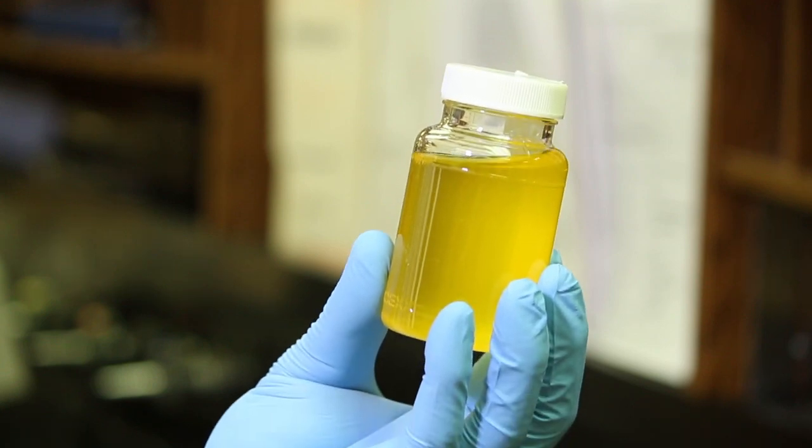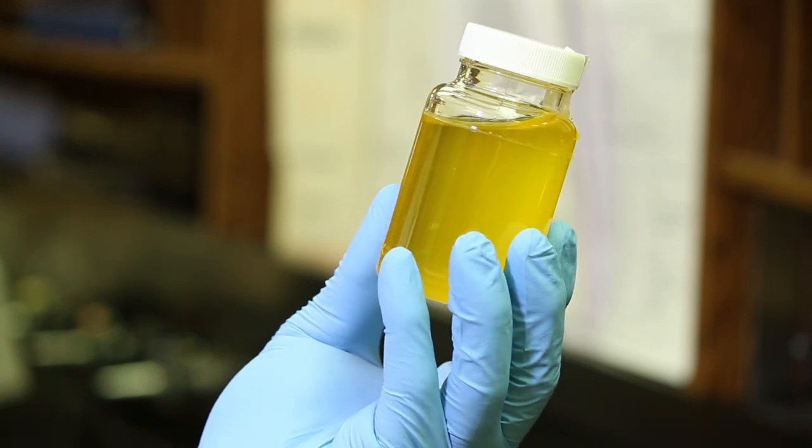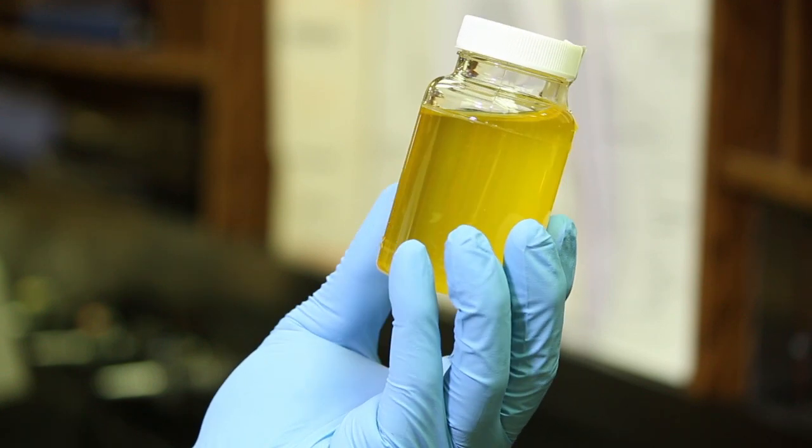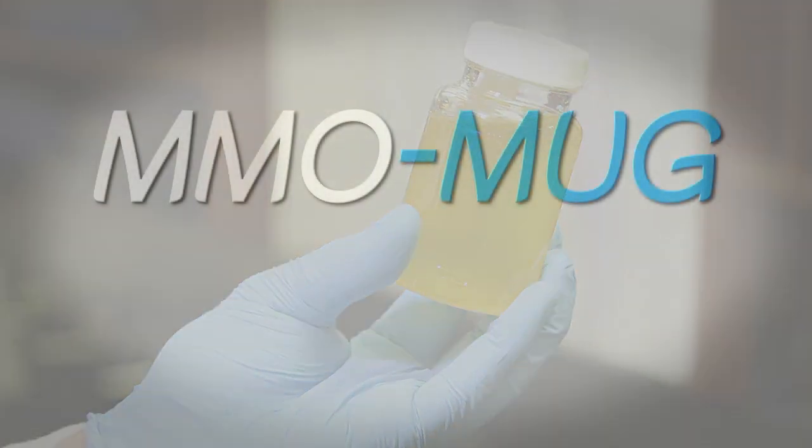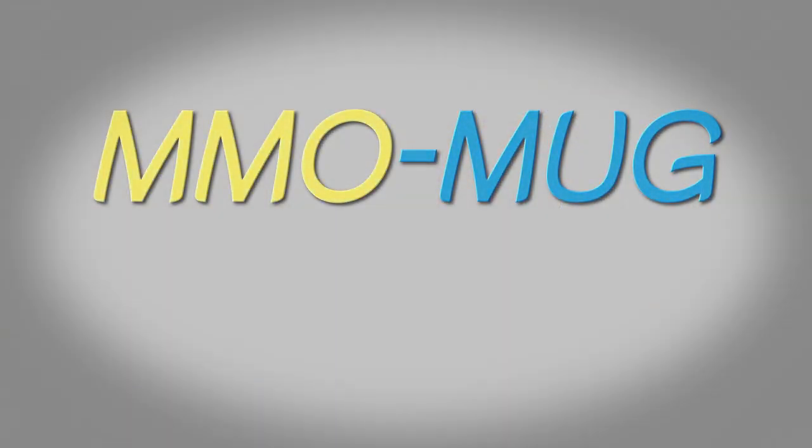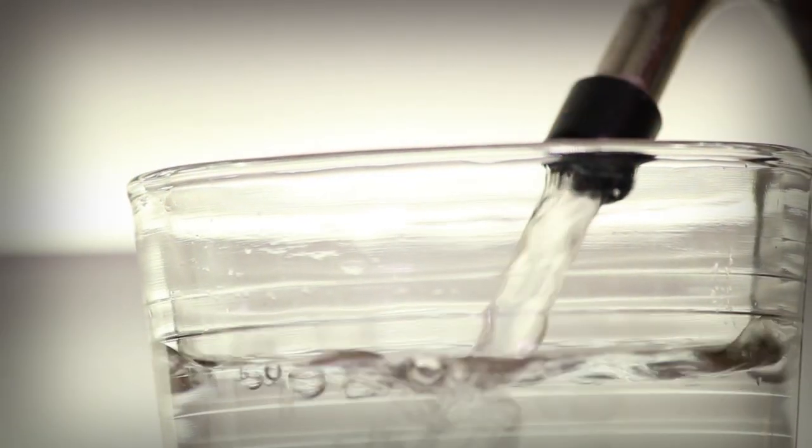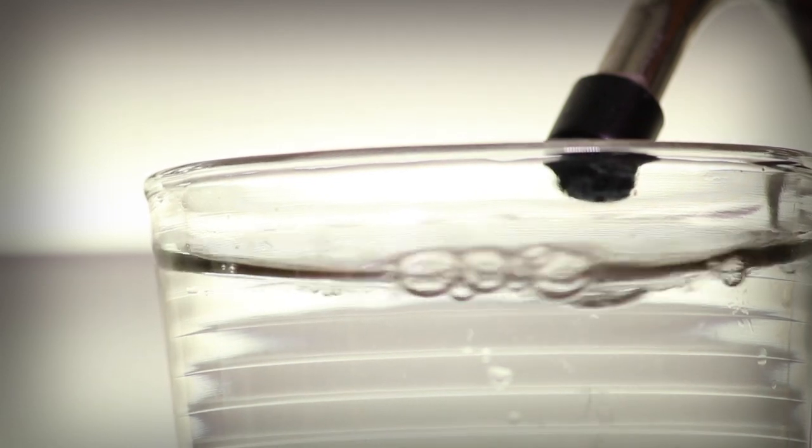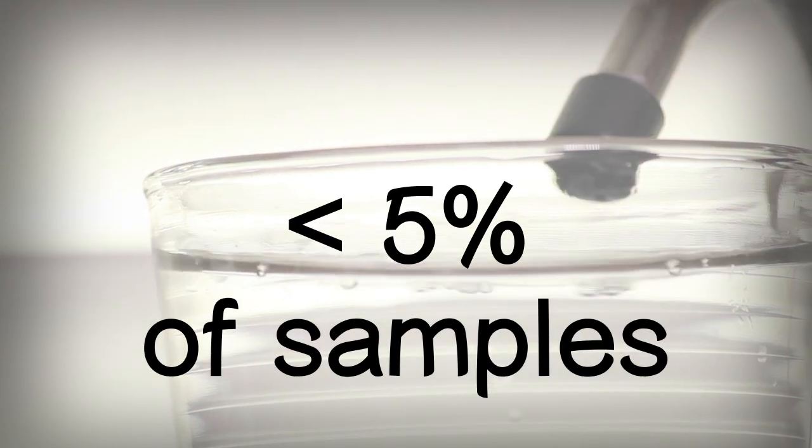After 24 hours of incubation, we inspect the test vials looking for a yellow color. The MMO in the MMOMUG will turn yellow in the presence of total coliforms. In drinking water samples, this should be rare in less than 5% of samples analyzed.